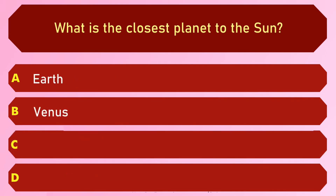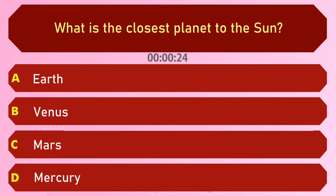What is the closest planet to the sun? Options are: A) Earth, B) Venus, C) Mars, and D) Mercury. The answer is option D, Mercury.